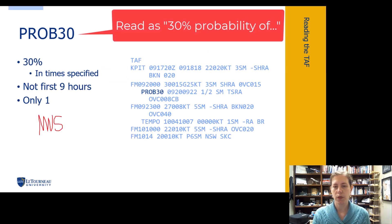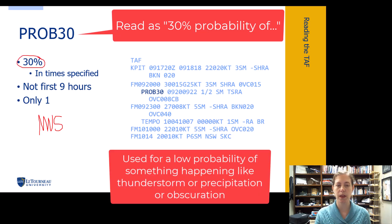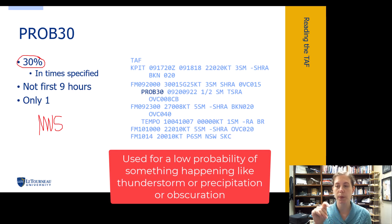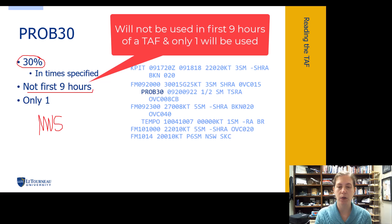This is only on national weather service TAFs. What a PROB30 is used by the national weather service to do is forecast a low probability, hence the number 30. So a 30% probability of specifically precipitation or thunderstorm and associated weather or obscuration type of elements. So something's going to happen precipitation or thunderstorm wise. And it's kind of a low probability. They're not sure about it. They don't use it in the first nine hours of the TAF either. And they have another restriction that they're only going to use one of these things.